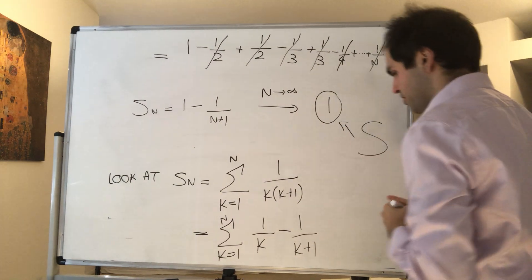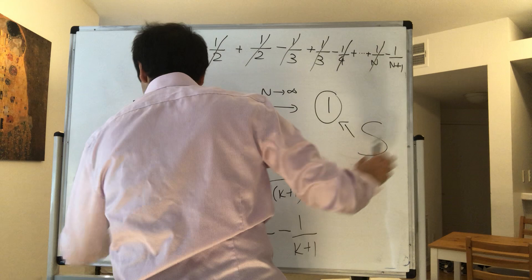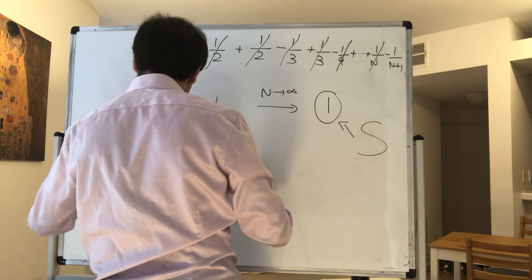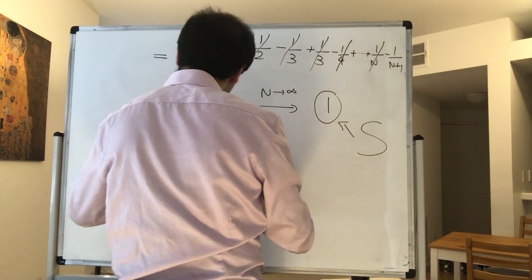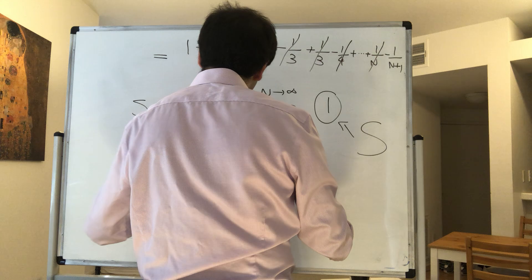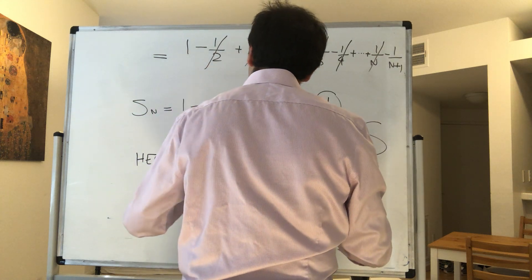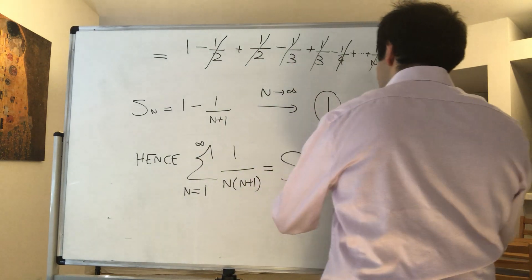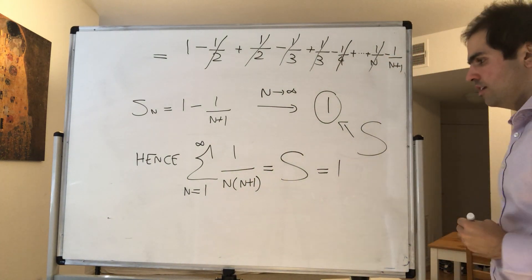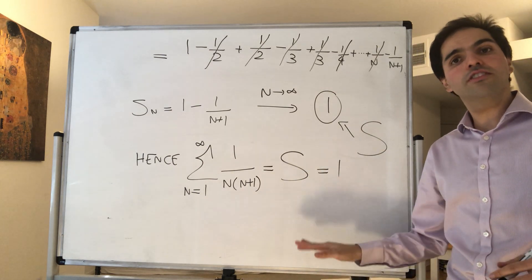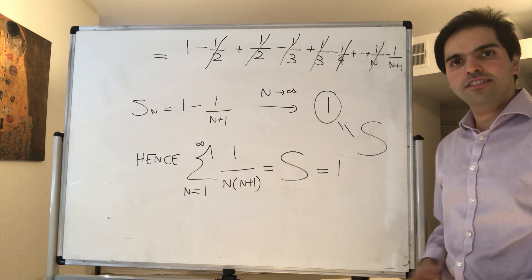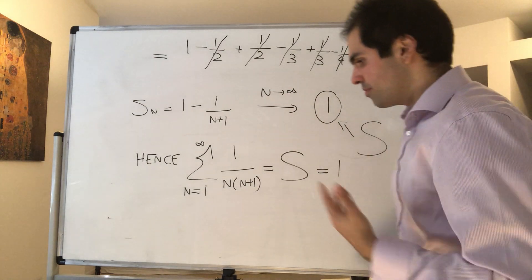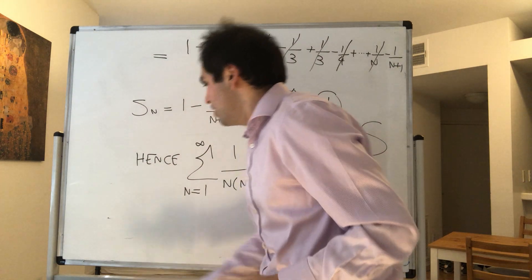And because the partial sums go to 1, we can say with confidence that the series is 1. So capital S equals 1. Hence the sum from n equals 1 to infinity of 1 over n times n plus 1 equals 1. This is how to rigorously show the value of a series: calculate the partial sums, then take a limit.